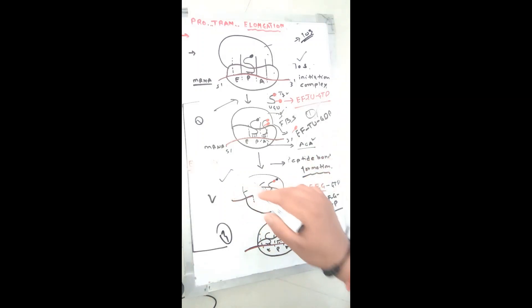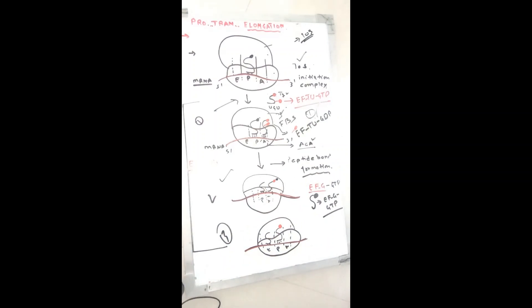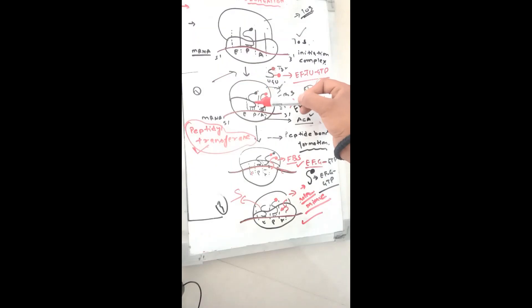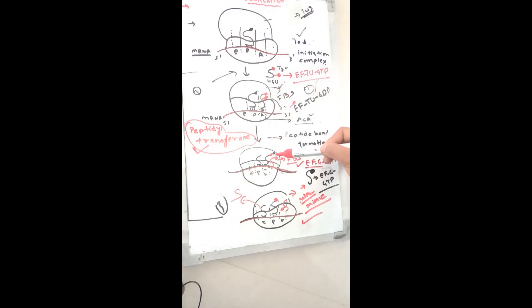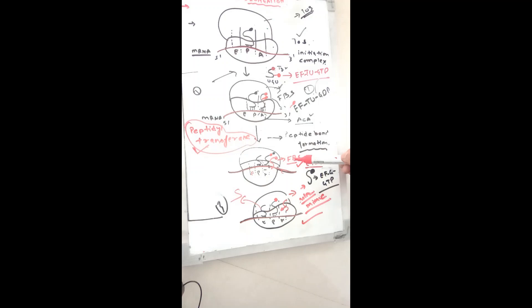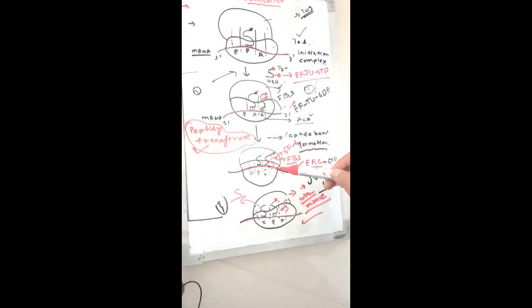Next is peptide bond formation by peptidyl transferase, where the amino acid on the P site tRNA is transferred to the A site tRNA. Translocation is carried out by elongation factor G, which also binds GTP. Once loaded on the complex, GTP comes in contact with the factor binding center on the large subunit, converting GTP to GDP. This causes a conformational change in elongation factor G, driving translocation of tRNAs from A to P site and P to E site.